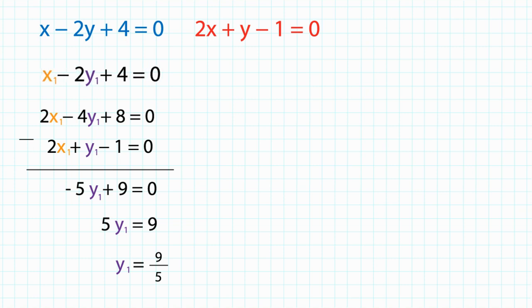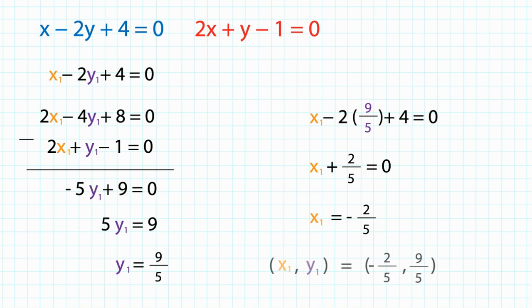Now substitute this value back into our first equation, and we can obtain the coordinates of the intersection. So x1 comma y1 is equal to negative 2 over 5 comma 9 over 5.